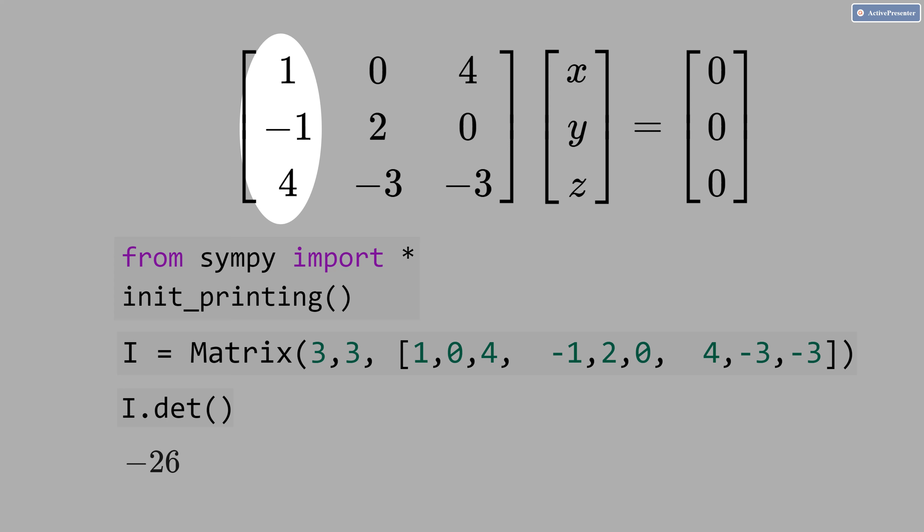That means we can conclude that this matrix here is invertible. There is the inverse. Then we can conclude that the vectors u, v and w, they are linearly independent.